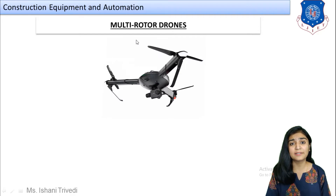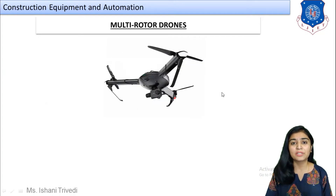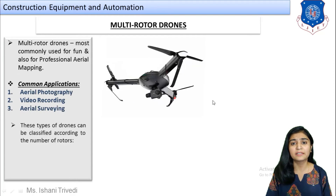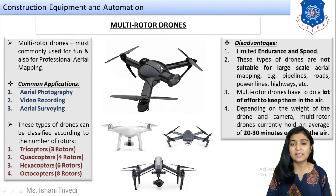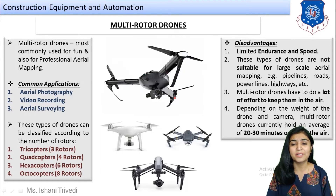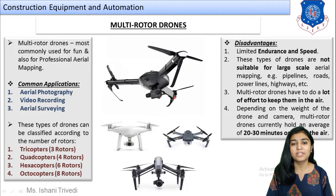Multi-rotor drones are just like helicopters, which have large rotating rotor blades, but here the size is smaller. The rotors can be one or more in number. As you can see, the camera is mounted at the bottom. This example shows 3 rotors — 3 arms with rotor blades mounted on each arm.